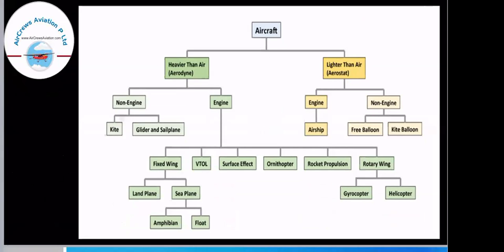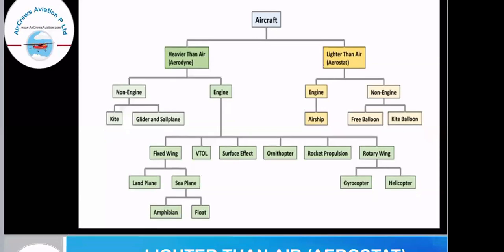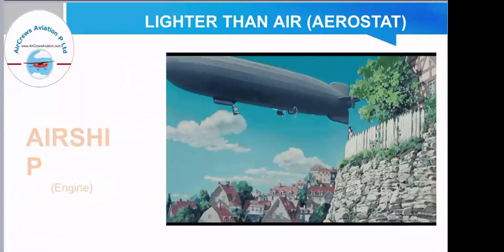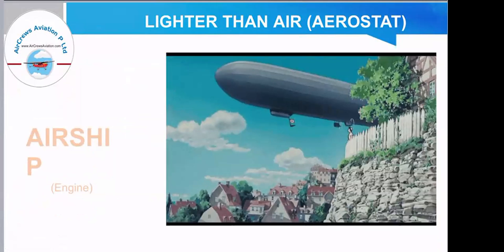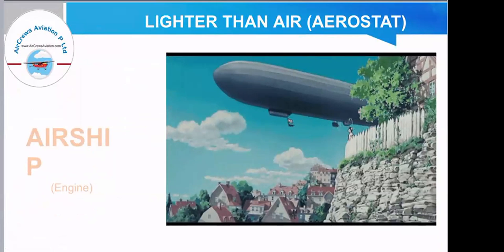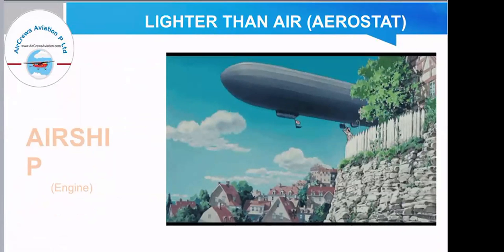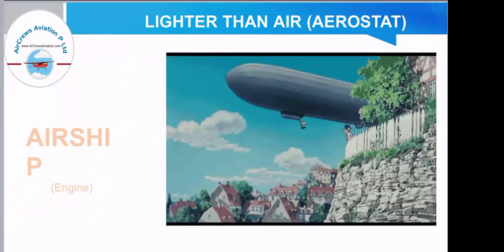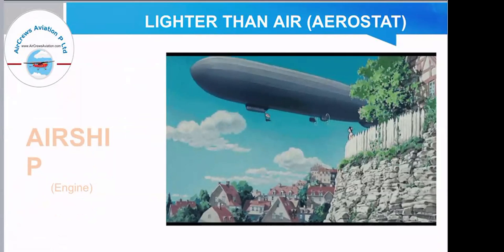First we will have a look at the lighter than air category, that is aerostats, which are further divided into engine and non-engine. Airships are the engine aircraft in this category. Airships were basically used from the early 1900s until the 1940s, with major use during World War I. These airships contain gas, mainly hydrogen or helium, and helium was preferred over hydrogen as it is lighter and non-flammable.